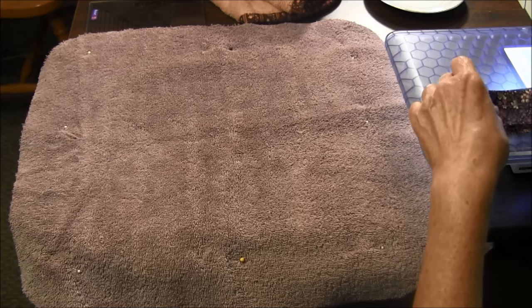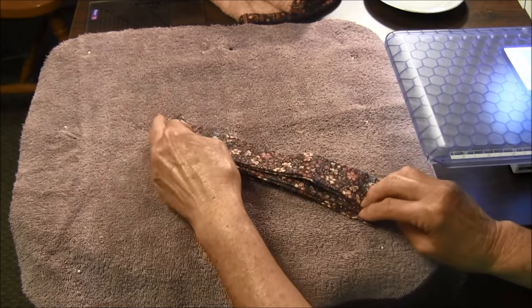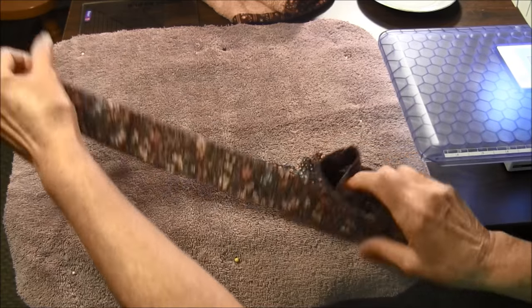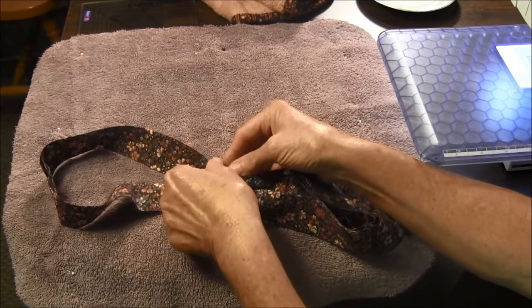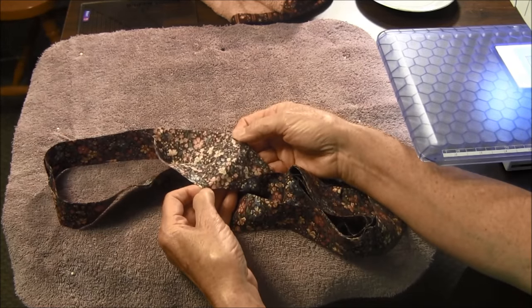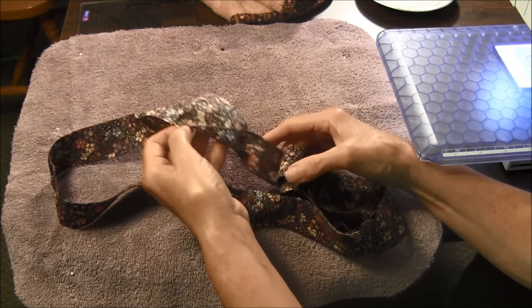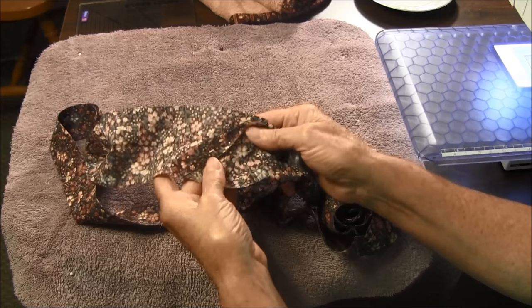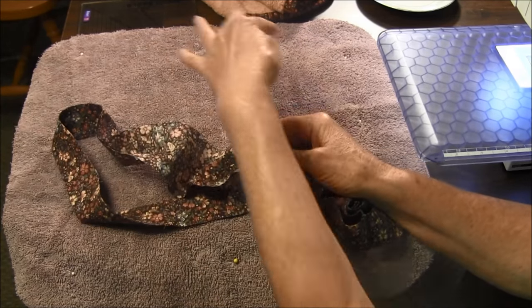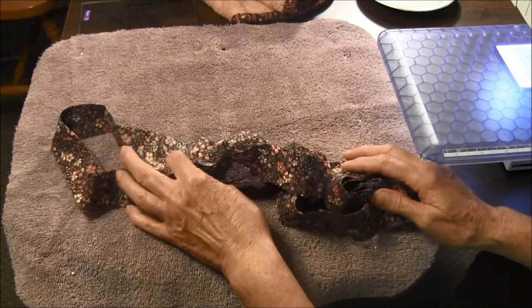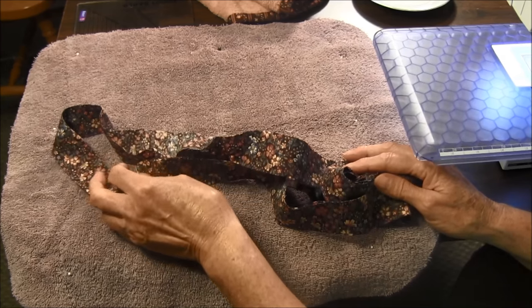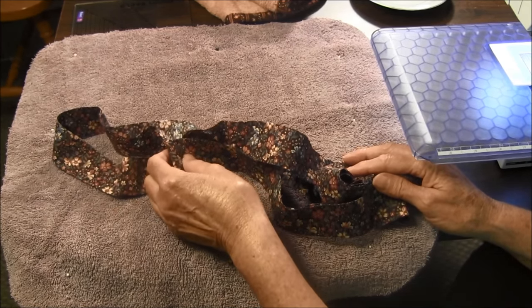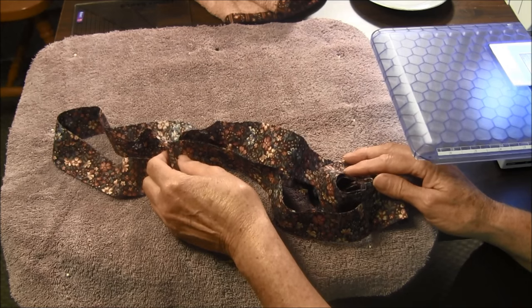The other thing you will need is binding. You need to cut three-inch wide binding or three-inch strips. Put them together so that it will go all the way around your mat. If you're not sure how to do this, watch our double fold binding video; a link will be in the description below.